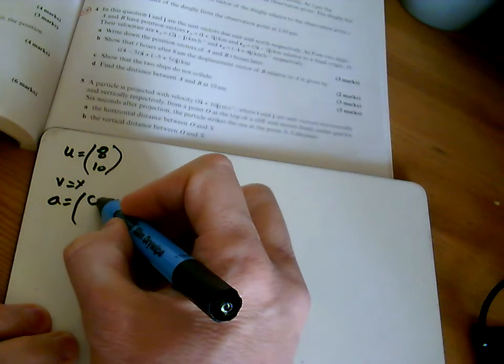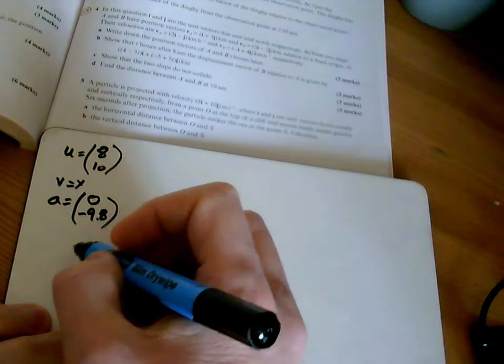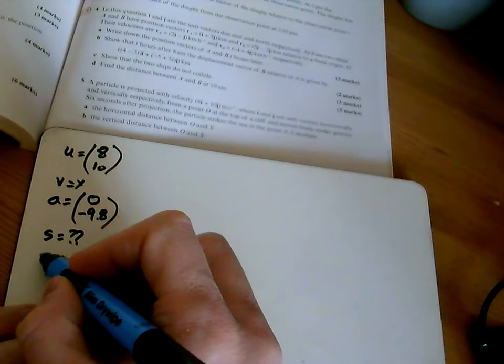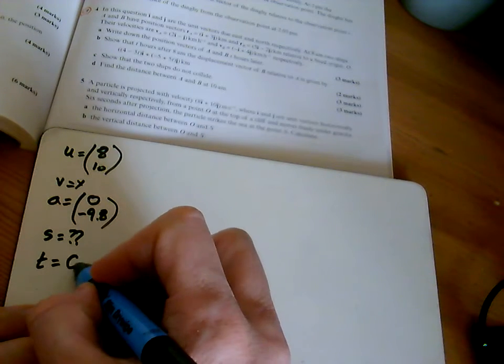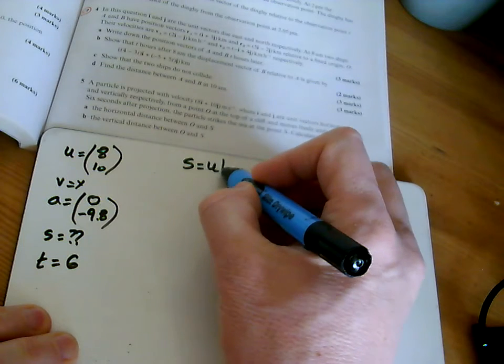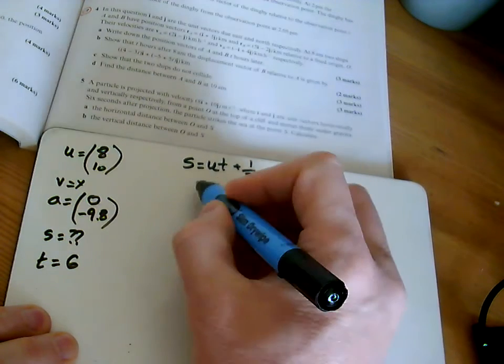...is nothing horizontally and minus 9.8 downwards. S, well that's what we're trying to find out. And t, we're told is 6 seconds. So we're just going to use s equals ut plus half a t squared. Here we've...